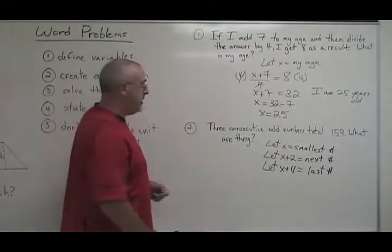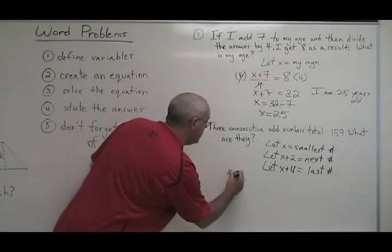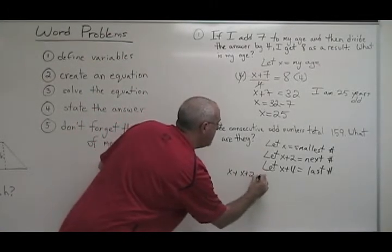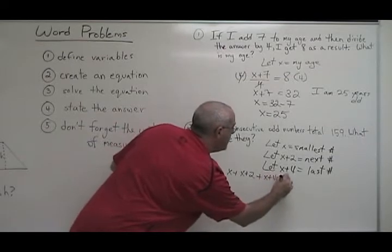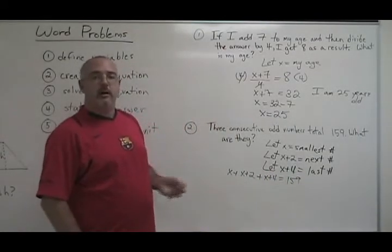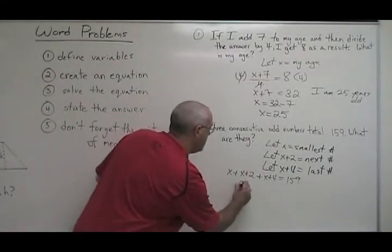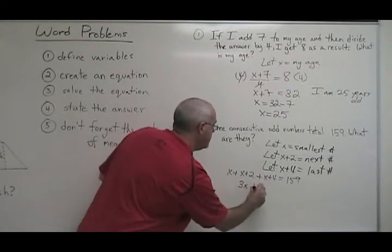Now when I build my equation, I am totaling 159. That just means add. So I will do x plus x plus 2 plus x plus 4 equals 159. And I have an algebraic equation that can be solved with algebra skills. x plus x plus x is equal to 3x. 2 plus 4 is equal to 6.